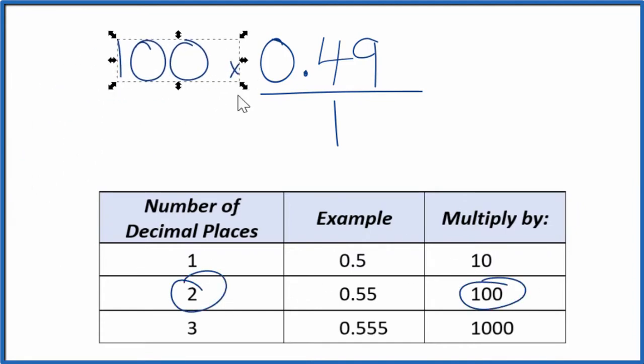So 100 times 0.49, that equals 49. And now we have a whole number.